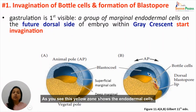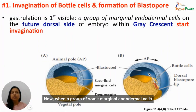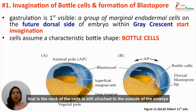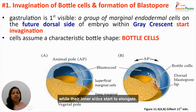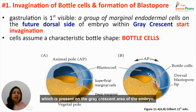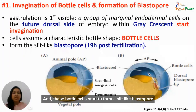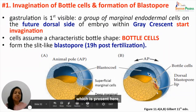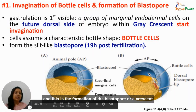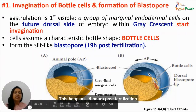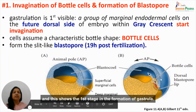These cells assume a characteristic bottle shape — the neck remains attached to the outside while their inner sides elongate — and are known as bottle cells. The bottle cells start to form a slit-like blastopore on the future dorsal side of the embryo. This crescent-shaped blastopore represents the entrance of cells toward the inside, occurring 19 hours post-fertilization, and marks the first stage in the formation of the gastrula.